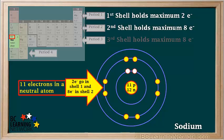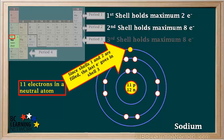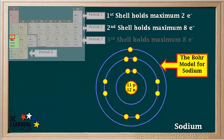Sodium has 11 electrons, so we still have one more to add. Since shells 1 and 2 are filled, sodium's 11th electron must go into shell number 3. So this is our Bohr model for sodium.